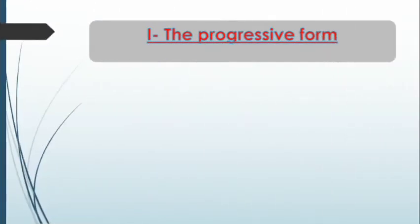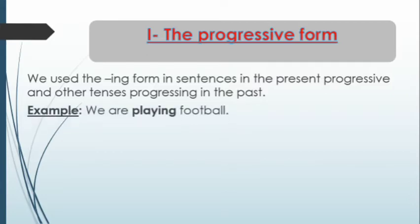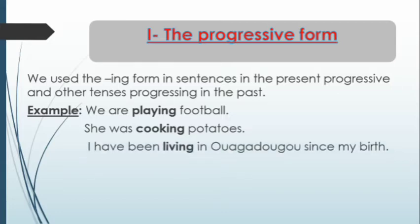Let's see the first point: the progressive form. The ING form is used in the present progressive, the past progressive, and the present perfect progressive. Let's see it with some examples. 'We are playing football' — this sentence is in the present progressive. 'She was cooking potatoes' — that is in the past progressive. And finally, 'I have been living in Ouagadougou since my birth' — this example is in the present perfect progressive. So when we use one of these sentences, we must make sure that we are using the ING form.